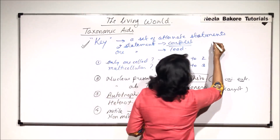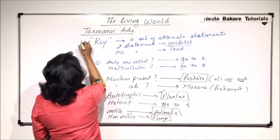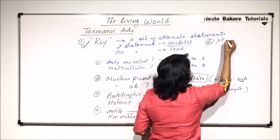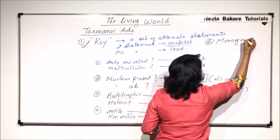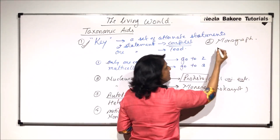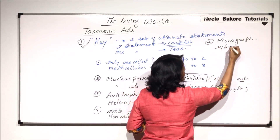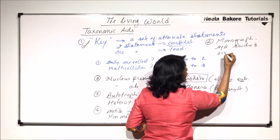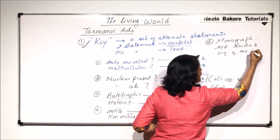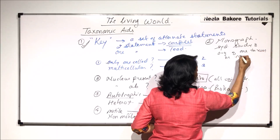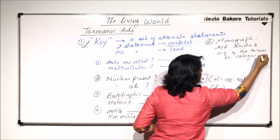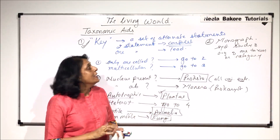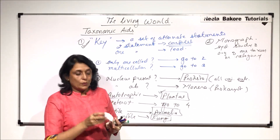The other taxonomic aid is called a monograph. A monograph is nothing but a systematic study of organisms of one taxon or category. So if you are studying organisms of only one taxon, only one category, then we call it a monograph.